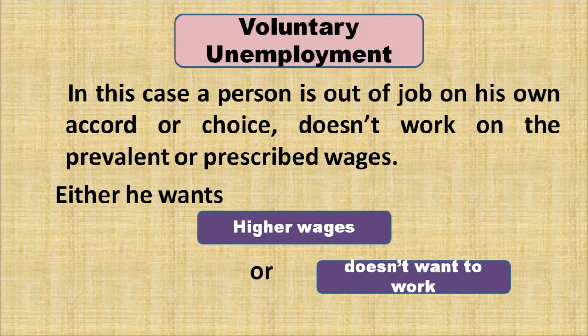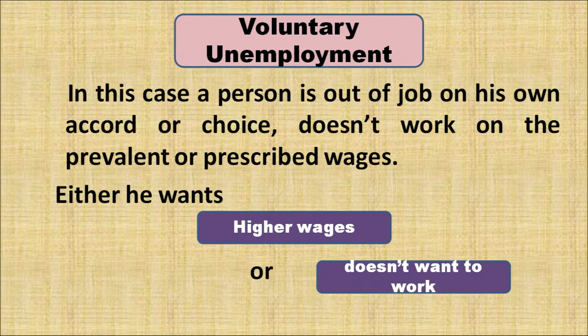Voluntary unemployment is the case in which a person is out of a job on their own accord or choice, and does not want to work at the current wage rate prevalent in the market. They may be looking for higher wages or simply do not want to work. For example, Person A is not willing to take any available employment opportunity because they may have sufficient money, so that person is called voluntarily unemployed. Similarly, if someone expects a higher wage and does not accept current employment, that is also voluntary unemployment.